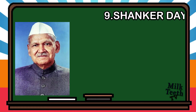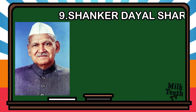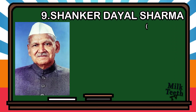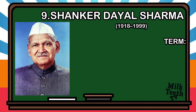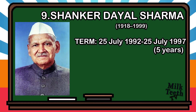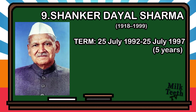Ninth President of India: Shankar Dayal Sharma. Born in 1918, he became the President of India on 25th July 1992 and served till 25th July 1997, for a period of 5 years.